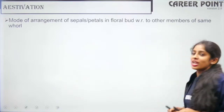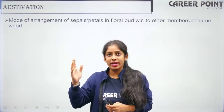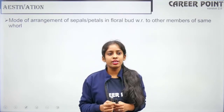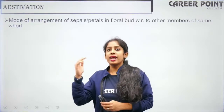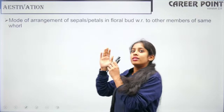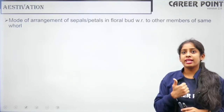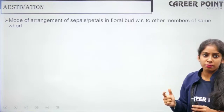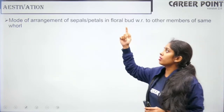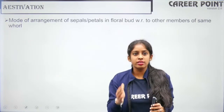Now we are going to look at another type of arrangement — aestivation. Venation was the arrangement of veins on your leaf blade; phyllotaxy was the arrangement of leaves on your stem or branch; then we had the position of ovary — hypogynous, epigynous and perigynous. Aestivation is the mode of arrangement of sepals or petals in a floral bud with respect to the other sepals or petals in the same whorl.